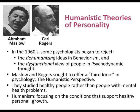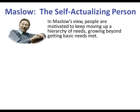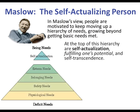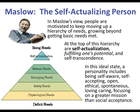Humanism focuses on the conditions that support healthy personal growth. In Maslow's view, people are motivated to keep moving up a hierarchy of needs. Physiological needs must be met before safety needs, then belonging, then esteem, with self-actualization at the top — fulfilling one's potential — and then self-transcendence: seeing that there are things more important than the self. In this ideal state, personality includes being self-aware, self-accepting, open, ethical, spontaneous, loving, and caring.